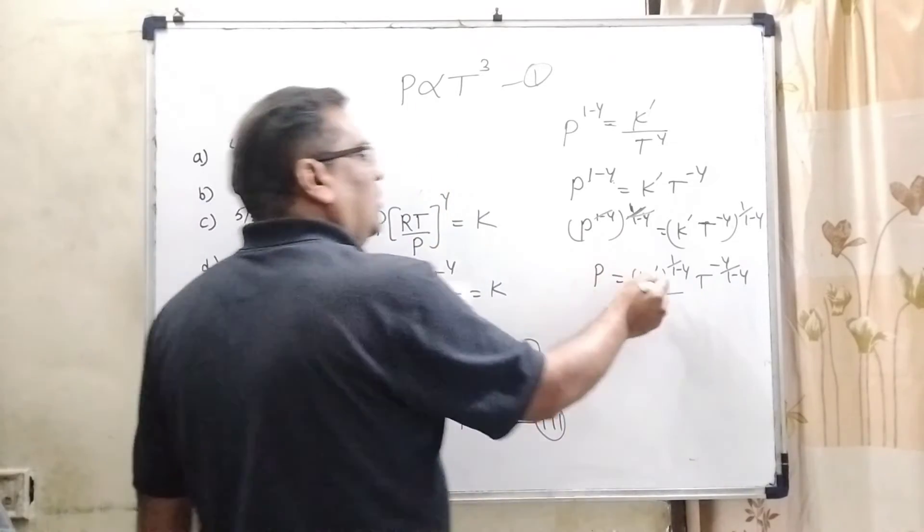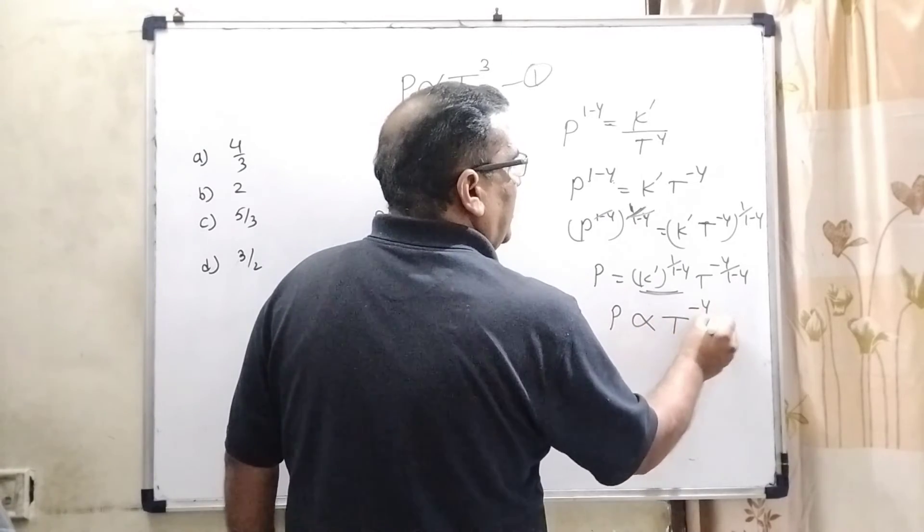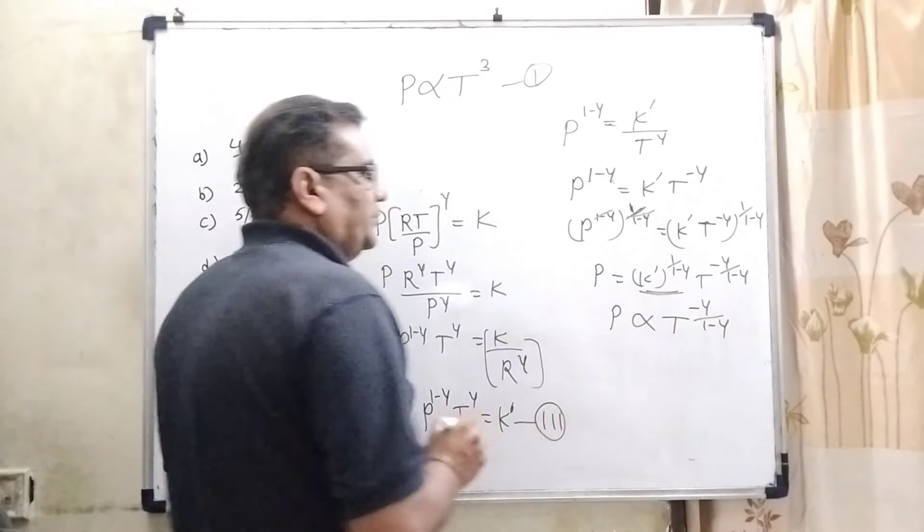This is the power of constant. So therefore, it is also a constant. So, P is directly proportional to T raised to power minus gamma upon 1 minus gamma.